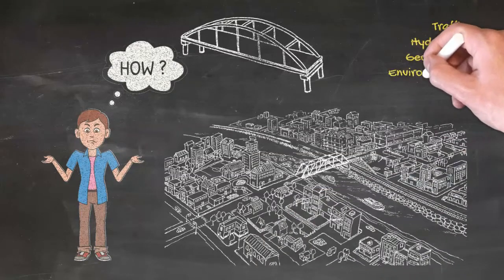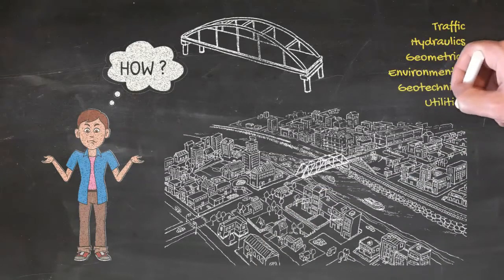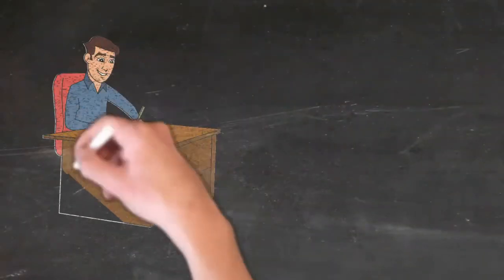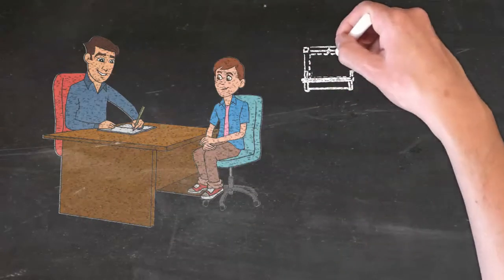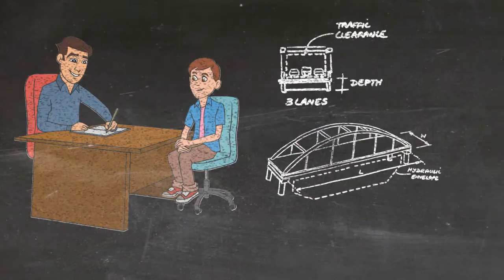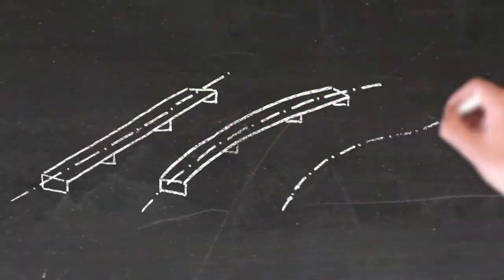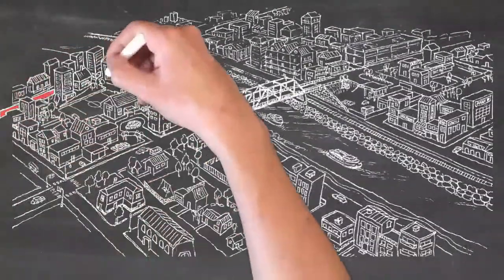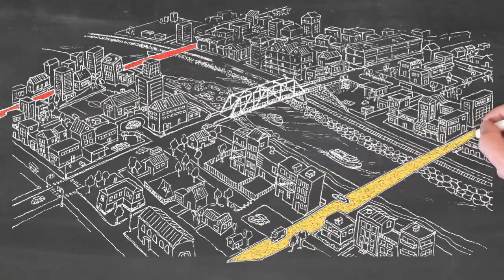Your scope may not involve developing the configuration of the bridge but ask your supervisor on how the general arrangement came about. Learn about the influence of highway geometrics on the bridge layout and vice versa. Are there other roadway alignment options and why were they not the best suited?